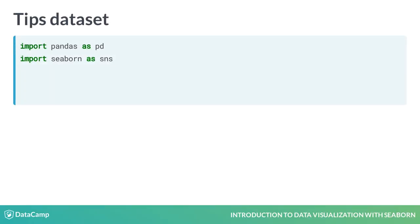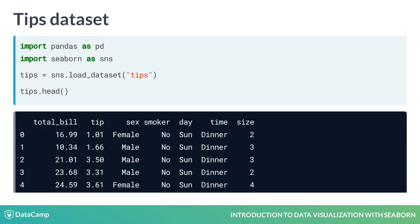You can access it by using the load_dataset function in Seaborn and passing in the name of the dataset. These are the first five rows of the TIPS dataset. This dataset contains one row for each table served at a restaurant and has information about things like the bill amount,